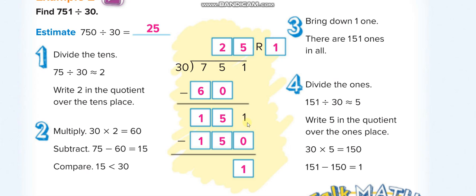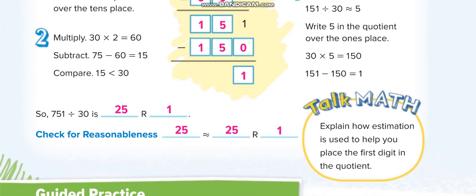Then we subtract: 151 minus 150 equals 1, so the remainder is 1. The quotient is 25, remainder 1.